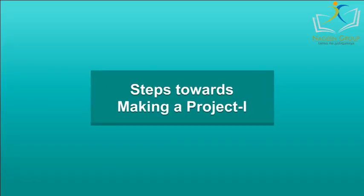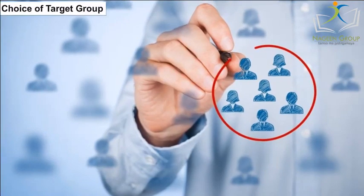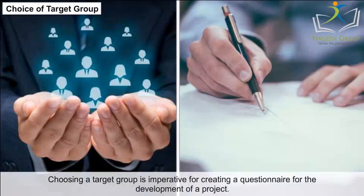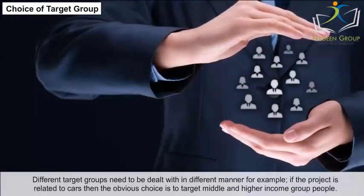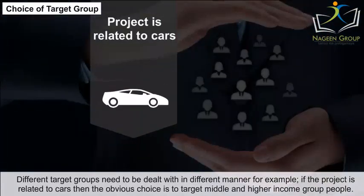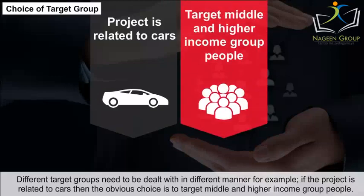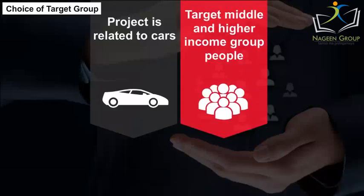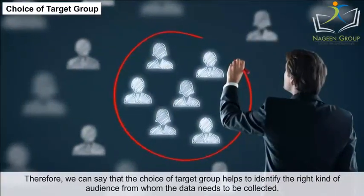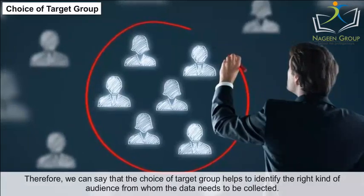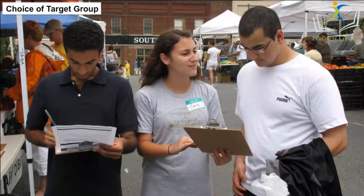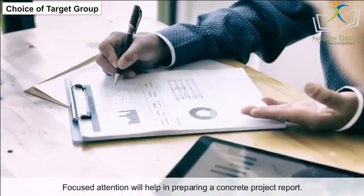Choice of Target Group. Choosing a target group is imperative for creating a questionnaire for the development of a project. Different target groups need to be dealt with in different manners. For example, if the project is related to cars, then the obvious choice is to target middle and higher income group people. Similarly, for beauty products, females will be the target group. The choice of target group helps to identify the right kind of audience from whom the data needs to be collected. Focused attention will help in preparing a concrete project report.